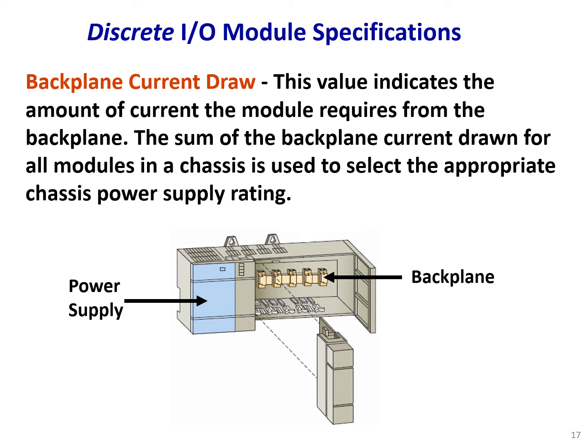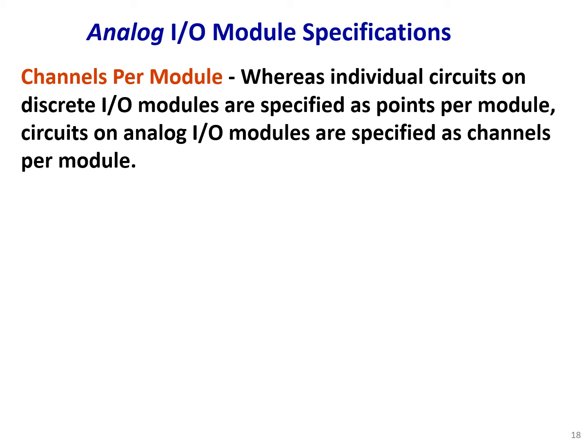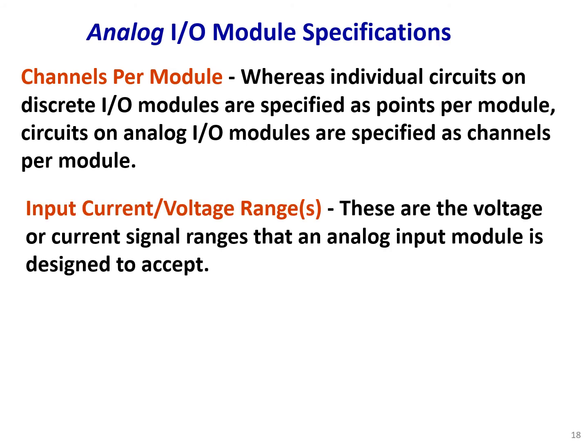Backplane current draw indicates the amount of current the module requires from the backplane. The sum of the backplane current drawn for all modules in the chassis is used to select the appropriate chassis power supply rating. Points is the term used for digital I/O, while channels is used for analog I/O — individual circuits on discrete I/O modules are specified as points per module, and circuits on analog I/O modules are specified as channels per module.